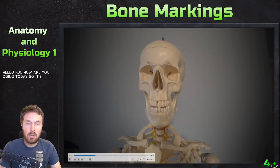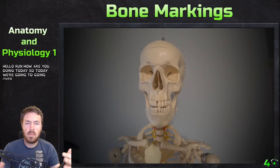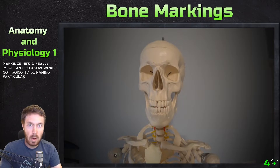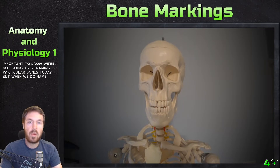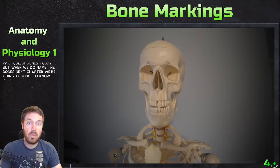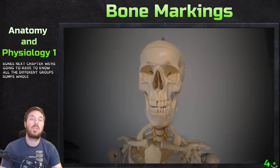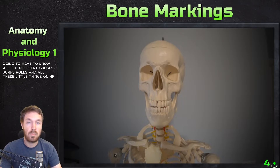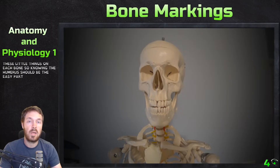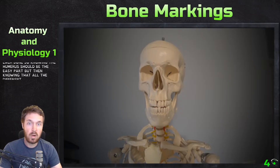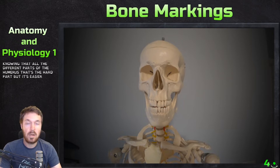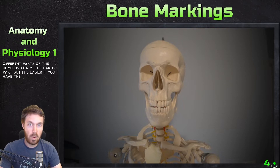Hello everyone, how are we doing today? So today we're going to be going over the major bone markings. These are really important to know. We're not going to be naming particular bones today, but when we do name the bones next chapter, we're going to have to know all the different grooves, bumps, holes, and all these little things on each bone. So knowing the humerus should be the easy part, but knowing all the different parts of the humerus — that's the hard part, but it's easier if you have the markings down.